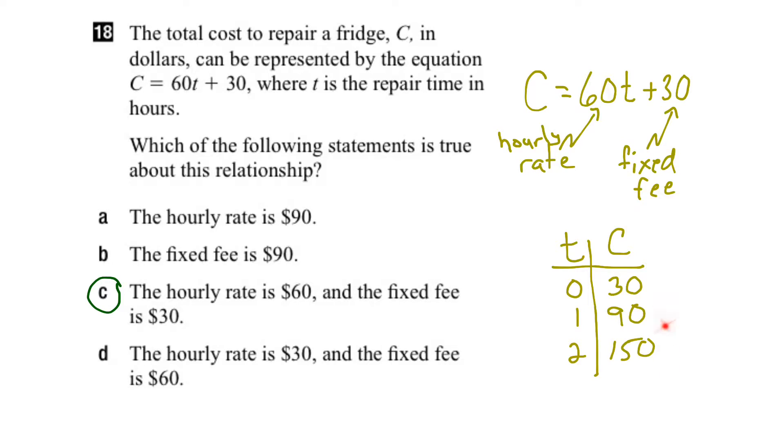So if we look at these values what we can determine is that even if we didn't have any time fixing the fridge it costs us $30, just perhaps for somebody to come up and take a look at it. And then for every hour of time that they spend fixing it, it costs us an additional $60 per hour. So there we go. It makes sense that C in this case would be the right answer.